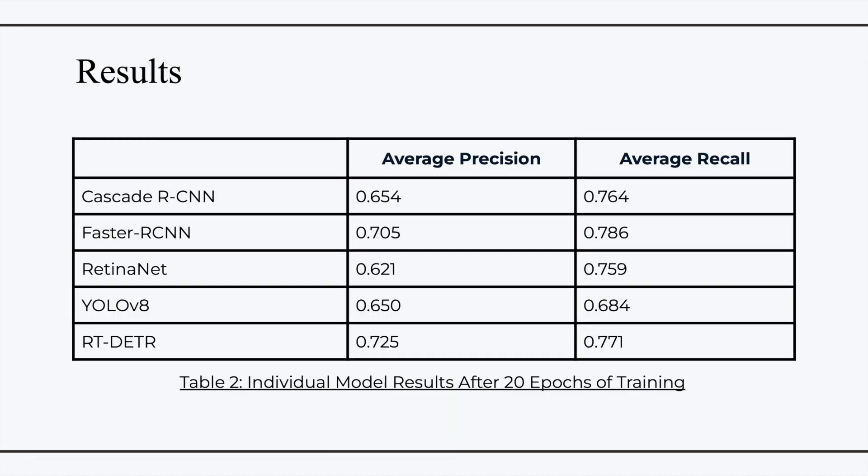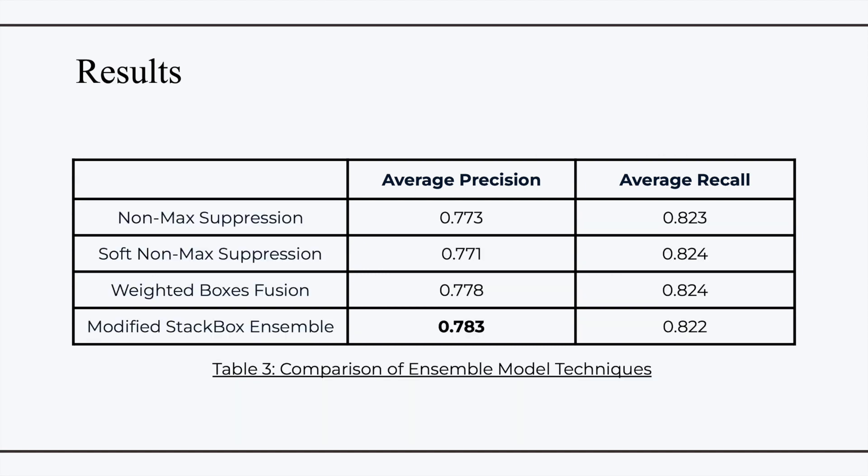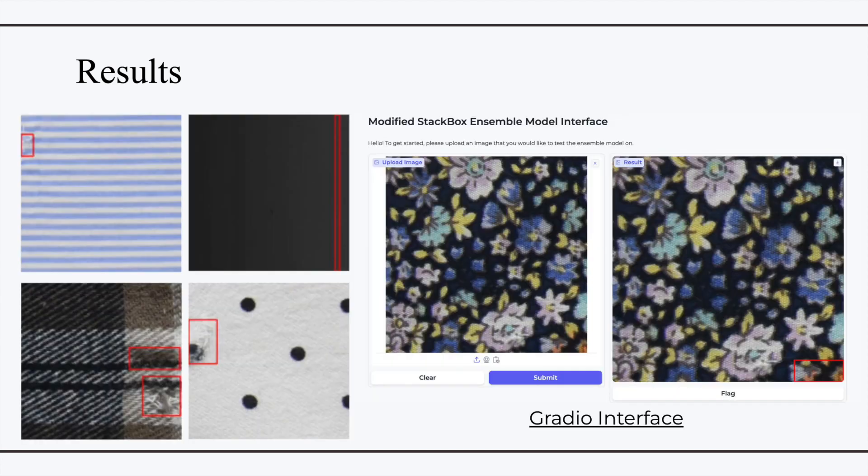From the results, RTDTR outperformed all models in terms of average precision and had the second highest average recall. While YOLO V8 had lower precision and recall scores, it had significantly shorter inference times than the three comparison models, making it suitable for an ensemble model. The stacked ensemble model also outperformed all three other techniques, demonstrating its effectiveness in combining the predictions of both base models. Here are some samples of the annotated images obtained from the ensemble model, as well as the output of the Gradio interface.